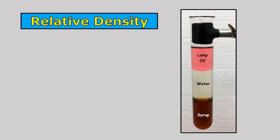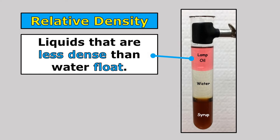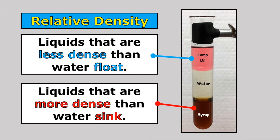We can also talk about the relative density of liquids and whether liquids float or sink in water. Liquids that are less dense than water float — you can see that this lamp oil is less dense than water because it's floating on the surface of the water. And liquids that are more dense than water sink. This syrup sank to the bottom of the test tube and formed a layer beneath the water, because syrup is more dense than the water.